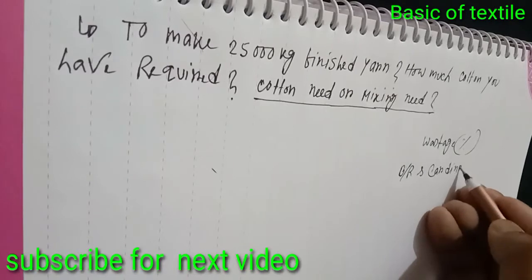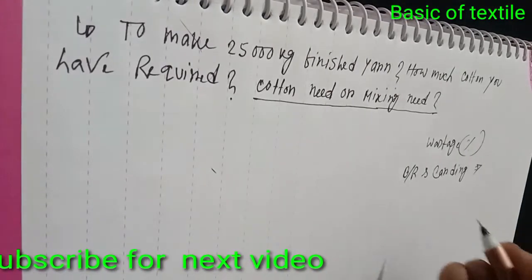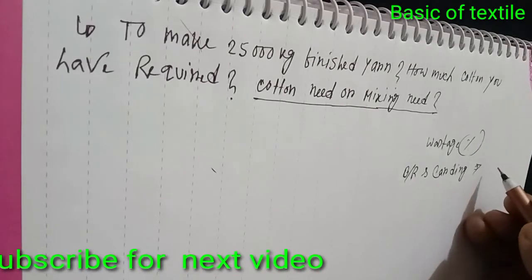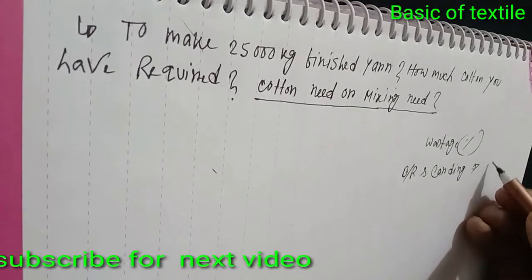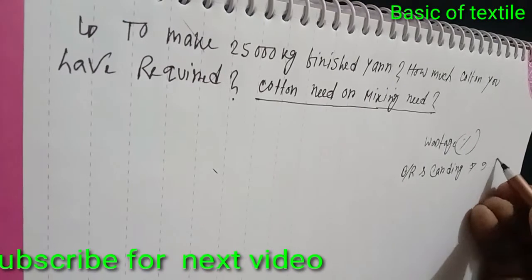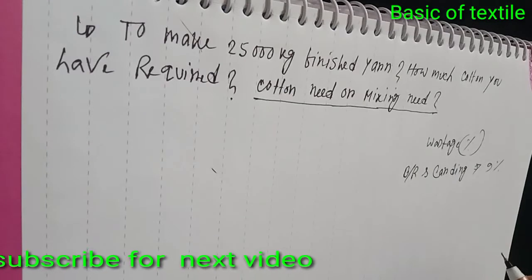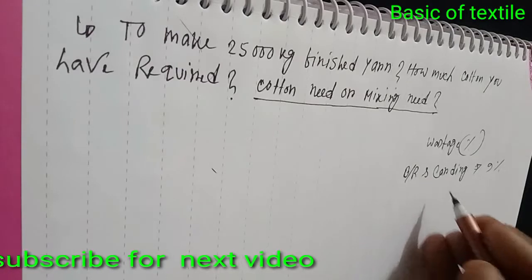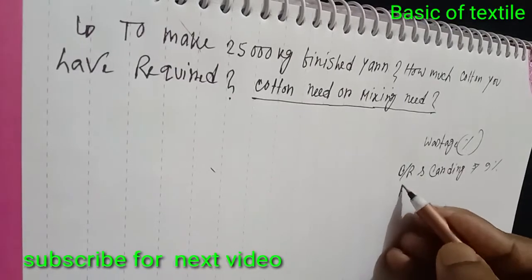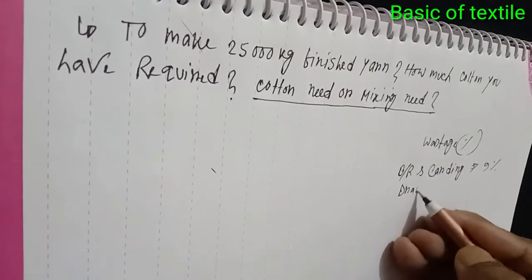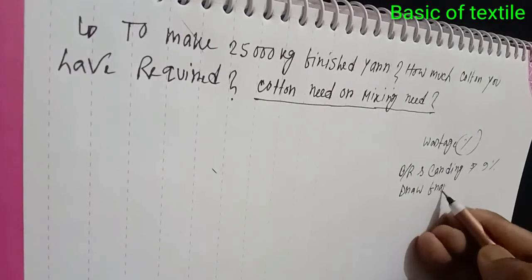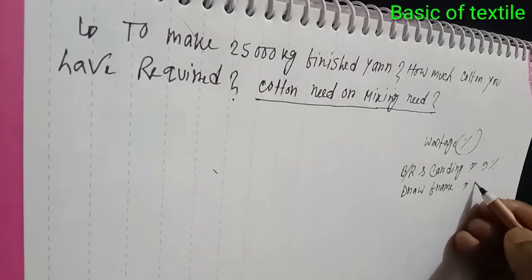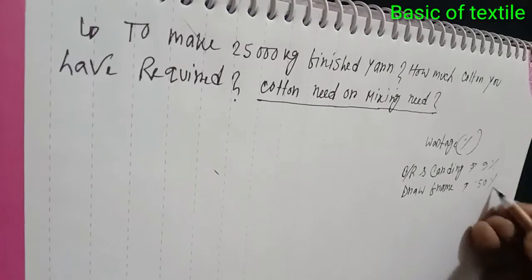Carding — this is 100% color. Waste at carding is 9%. Then Draw Frame — moisture fluctuation waste is 0.50%.